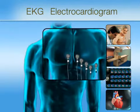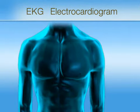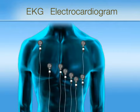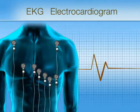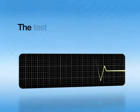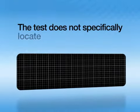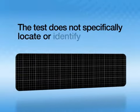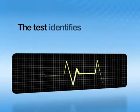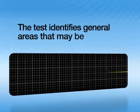Some of these tests include an EKG, or electrocardiogram. This test uses patches applied to the skin of your chest, arms, or legs to record the electrical activity of your heart. The test does not specifically locate or identify blockages — it identifies general areas that may be of concern.